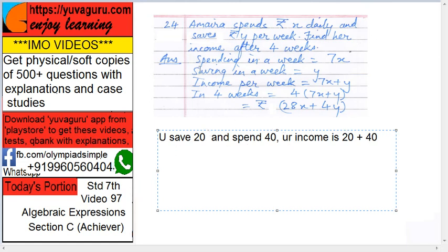Similarly over here, spending and saving, so income is total 7x plus y. This is the income for a week. So in 4 weeks, 4 into 7x plus y. You solve this: 28x plus 4y.